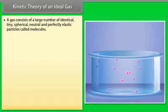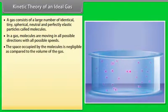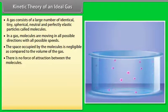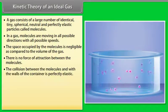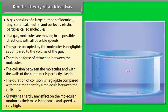Kinetic theory of an ideal gas: A gas consists of a large number of identical, tiny, spherical, neutral and perfectly elastic particles called molecules. In a gas, molecules are moving in all possible directions with all possible speeds. The space occupied by the molecules is negligible as compared to the volume of the gas. There is no force of attraction between the molecules. The collision between the molecules and with the walls of the container is perfectly elastic. The duration of collision is negligible compared with the time spent by a molecule between the collisions. Gravity has hardly any effect on the molecular motion as their mass is too small and speed is very high.